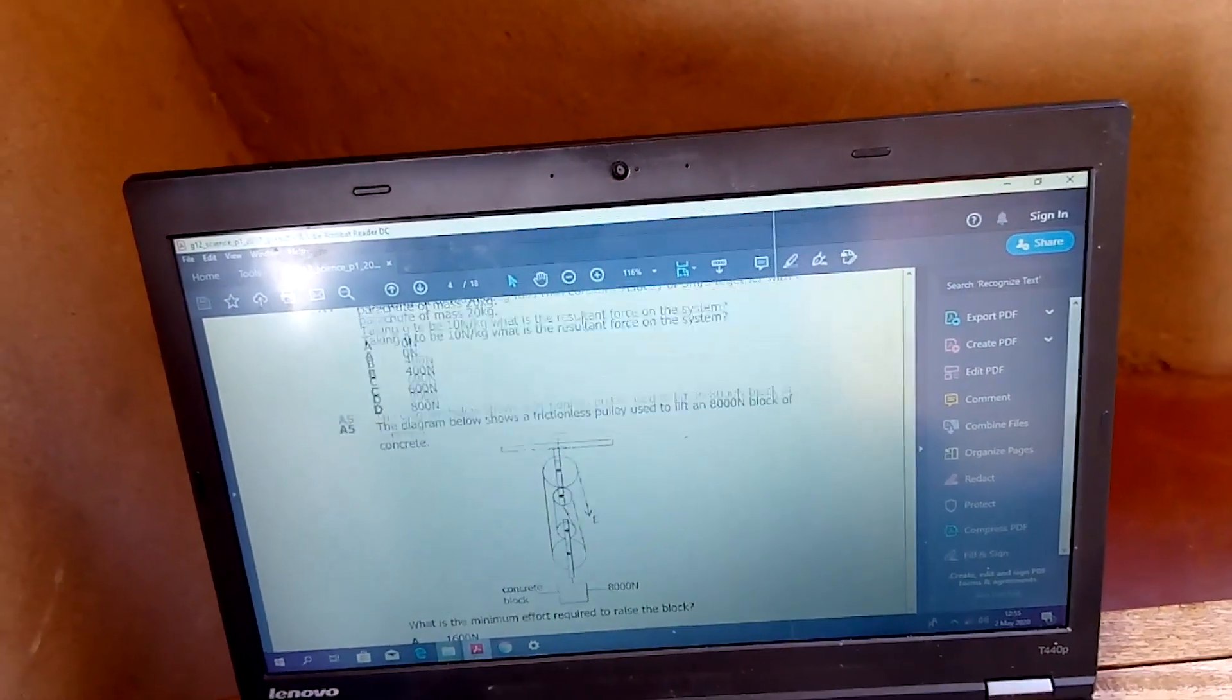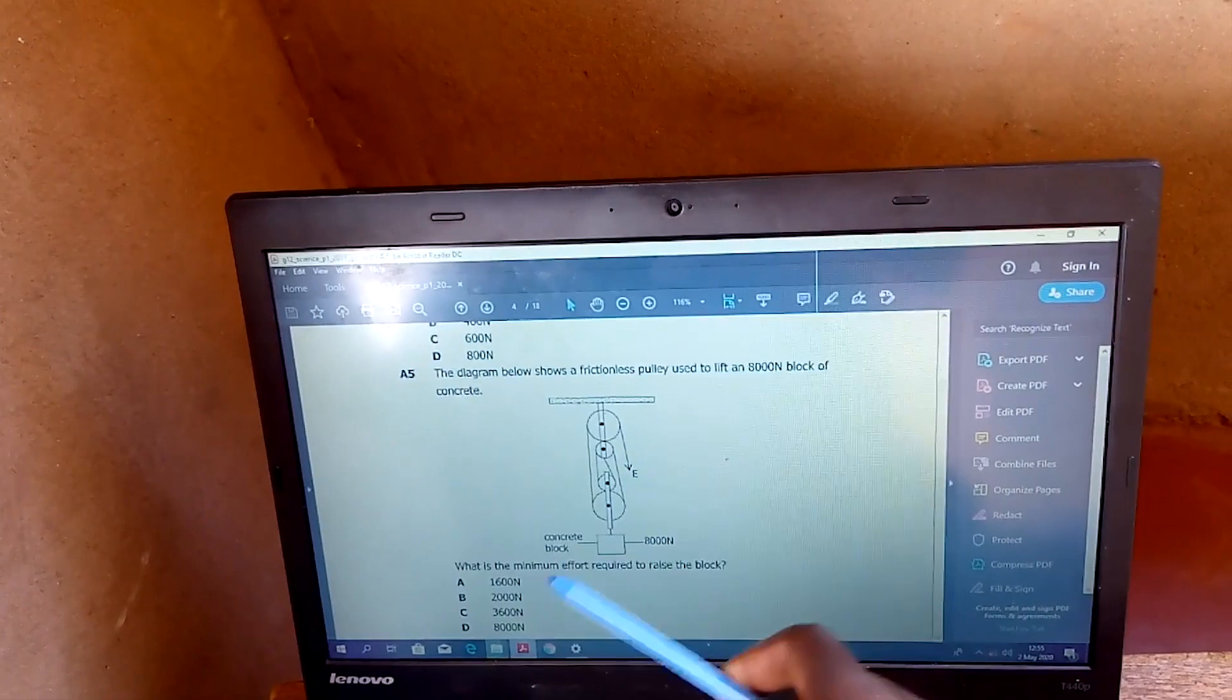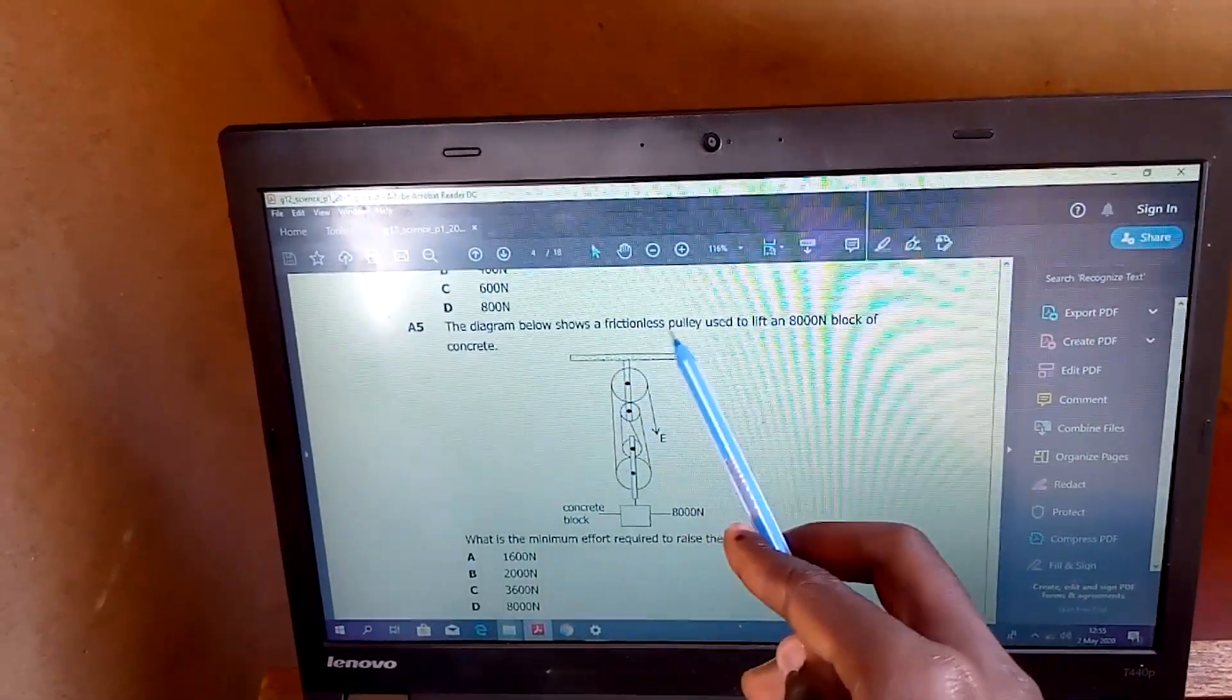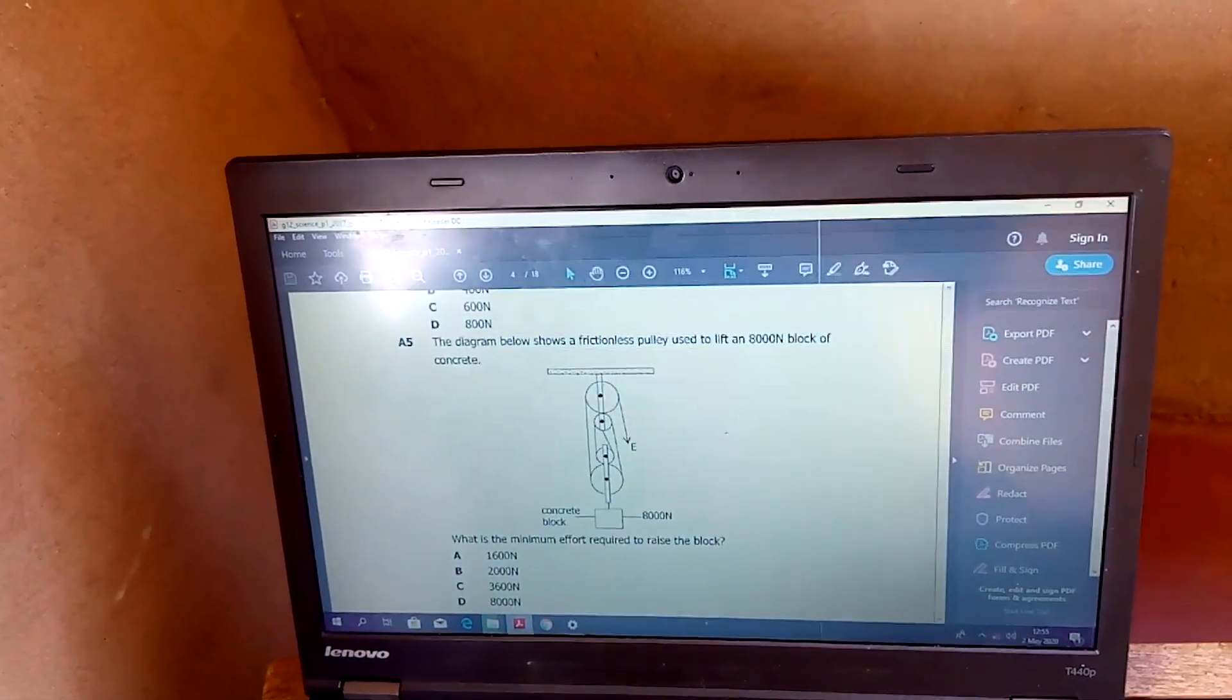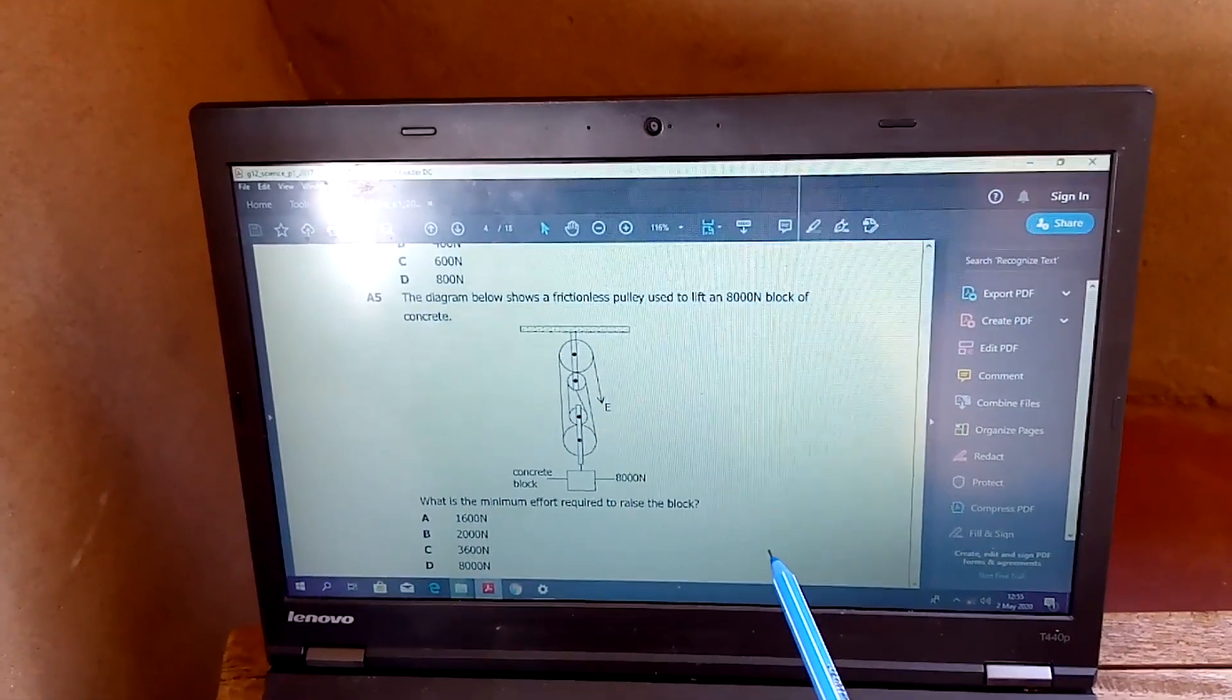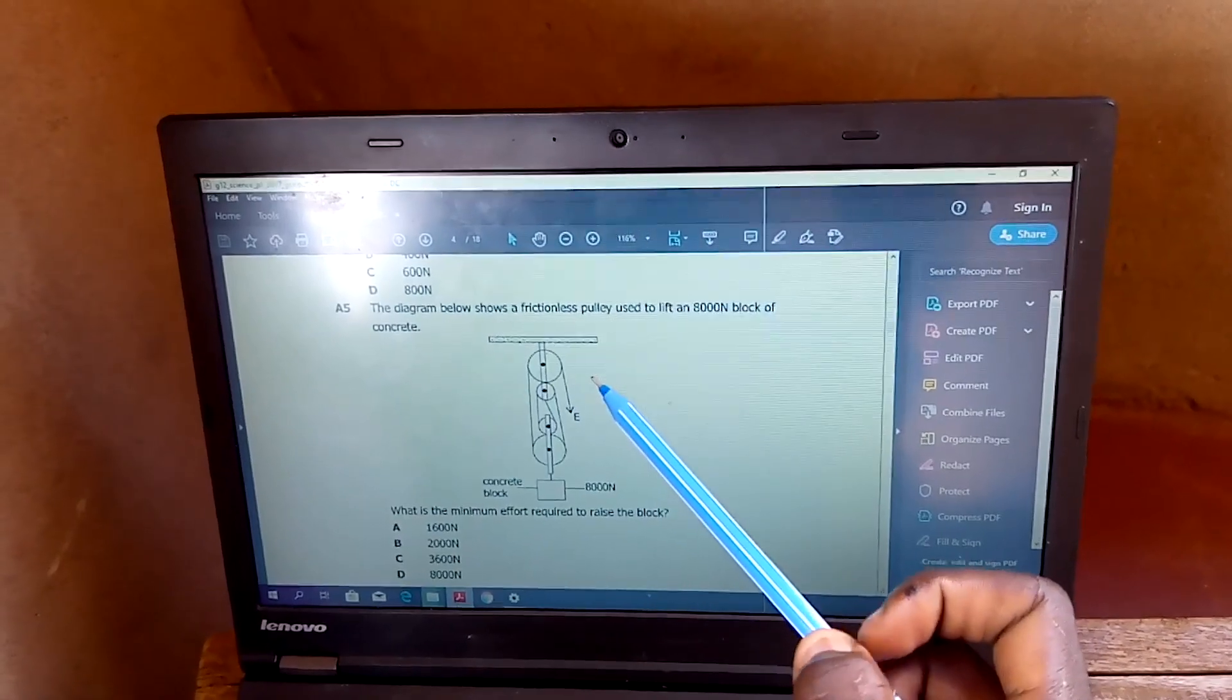The diagram below shows a frictionless pulley used to lift an 8,000 newton block of concrete. What is the minimum effort required to raise the block? If we look at this whole system, they are saying it's a frictionless pulley. In other words, it's an ideal pulley system. So if the system is ideal, then the efficiency is 100%. And if the efficiency is 100%, then the mechanical advantage and the velocity ratio are equal.